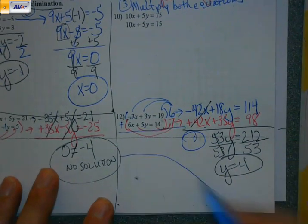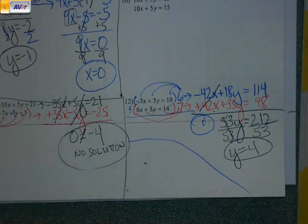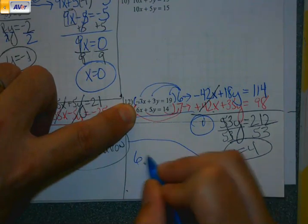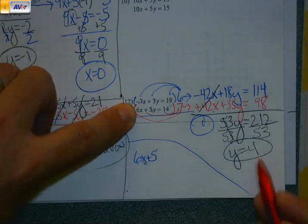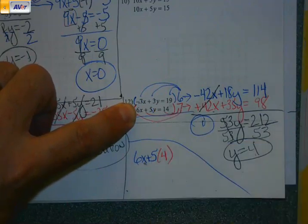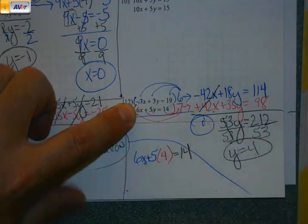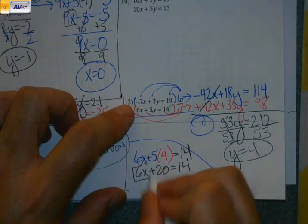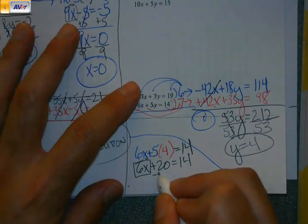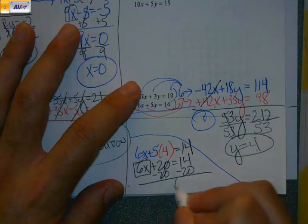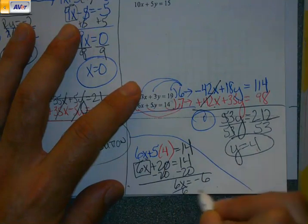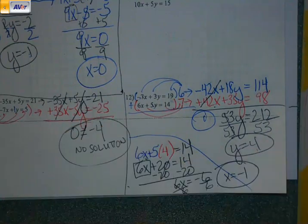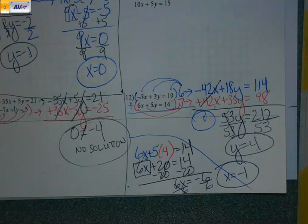Just like we've done on the others, once I have one of my equations solved for one of my variables, pick either equation. Don't care. I'm going to use this one. Plug in for the correct variable. This time it's y that I'm plugging in for. And now we're just going to finish this two-step equation off. Opposite of plus 20 is to minus 20. Opposite multiply to 6 is to divide by 6. Here's our goal.